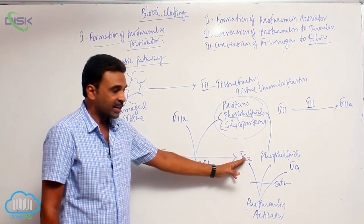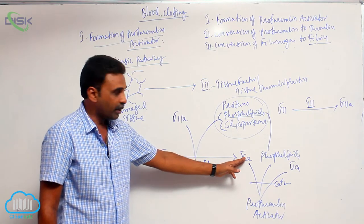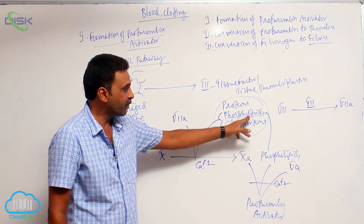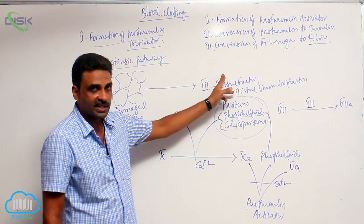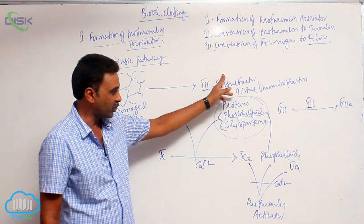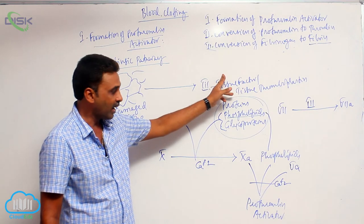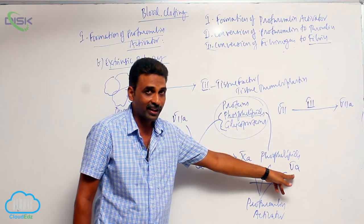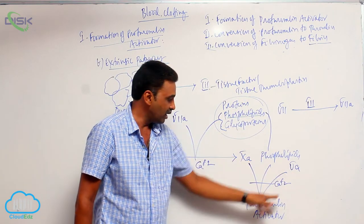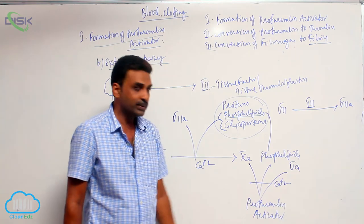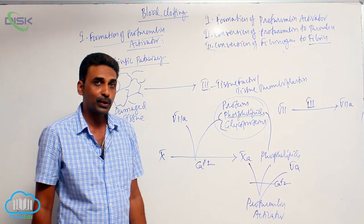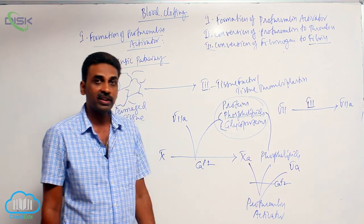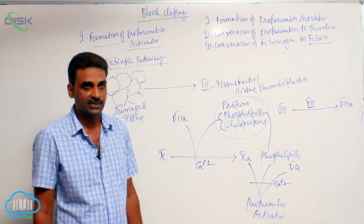Then that activated Factor X, along with the phospholipids present in Factor III and activated Factor V, in the presence of calcium ions, will finally produce prothrombin activator.